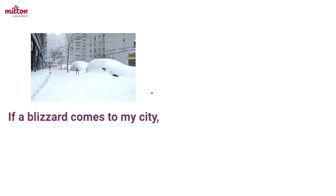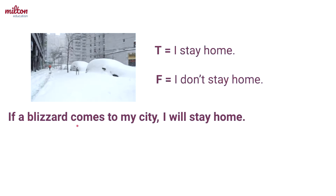Let's take a look at some examples of the first conditional. "If a blizzard comes to my city, I will stay home." You can think of this sentence as a prediction about the future. We don't know what will happen, but we do know one thing — a blizzard must come to my city in order for me to stay home. The first part of the sentence is called the condition; the second part is called the result. If the condition is true, then the result is also true. If the condition is false, then the result is also false.